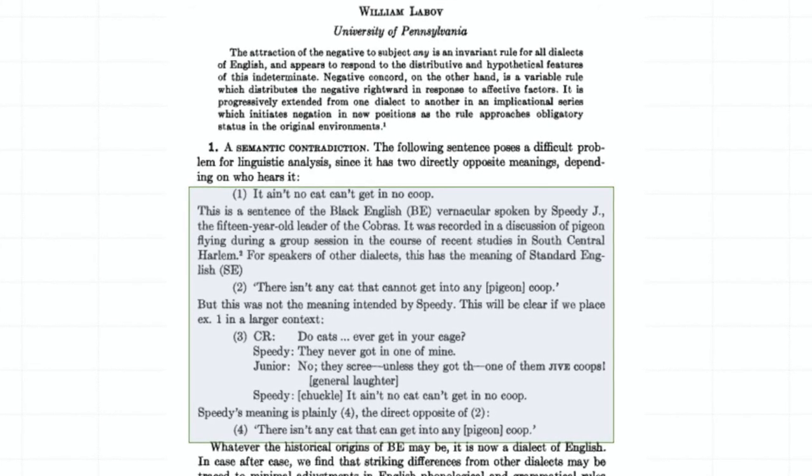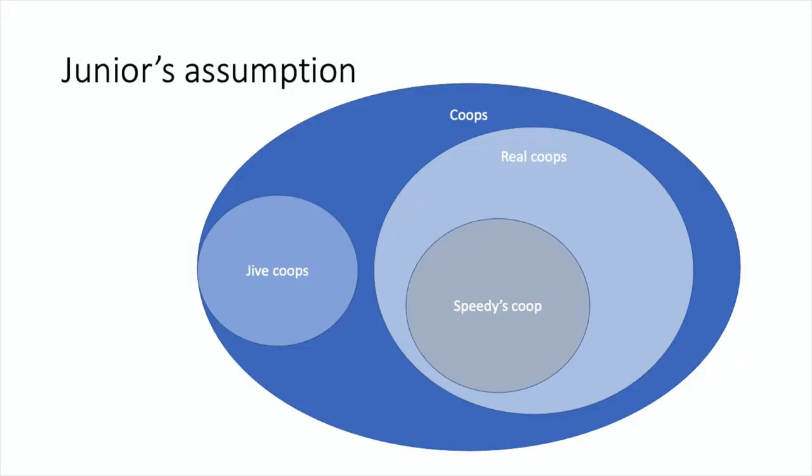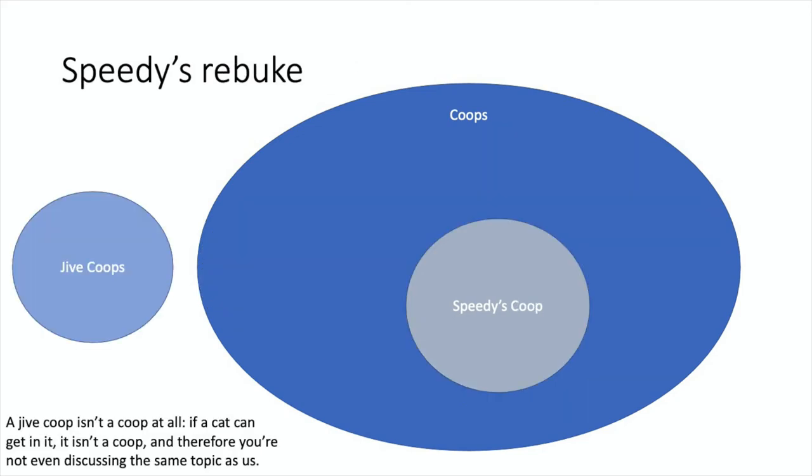He's still effectively talking about his coop. Junior's assumptions about the world can be represented like this. A jive coop isn't a coop at all, and I told you I built a coop.